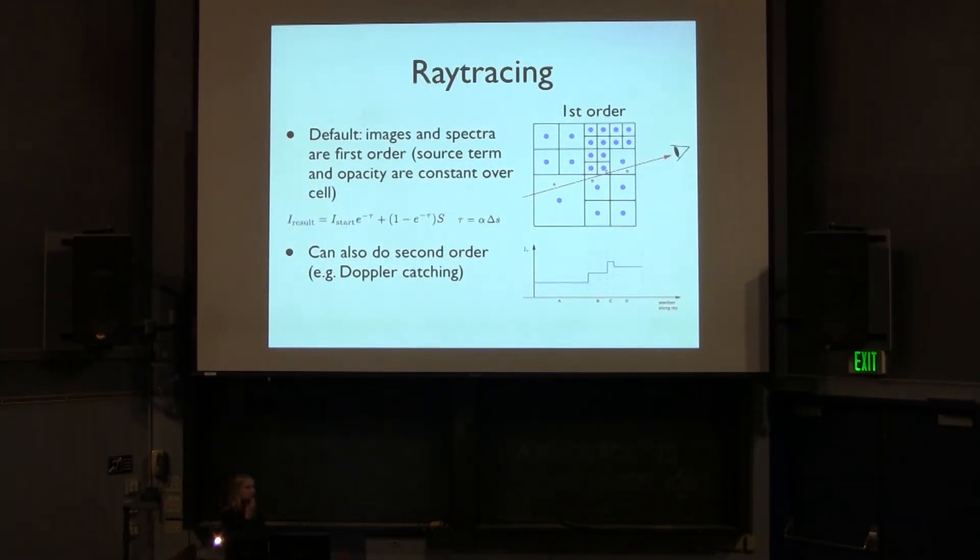Finally, one of the things that you might want to do is create images along a particular line of sight through the code. So once the code computes the level populations and the intensities in each of the cells, then you probably want to integrate along a line of sight to get some image or spectra. And the way RADMC3D does this is by the simple formula by adding up the emission just walking through the cells along a ray. And even if you're not doing Doppler catching, there is a flag to make it second order.